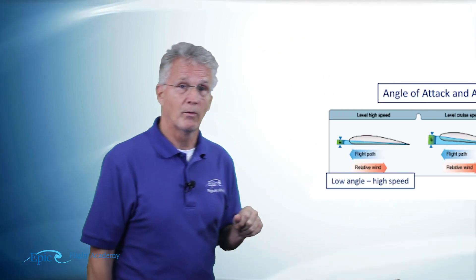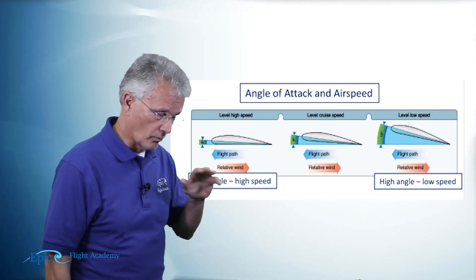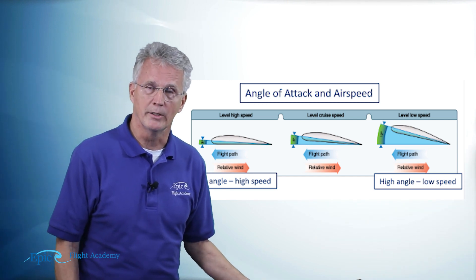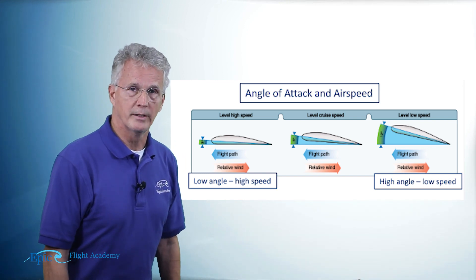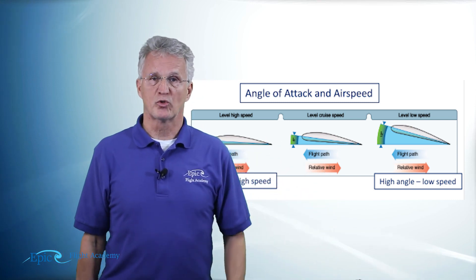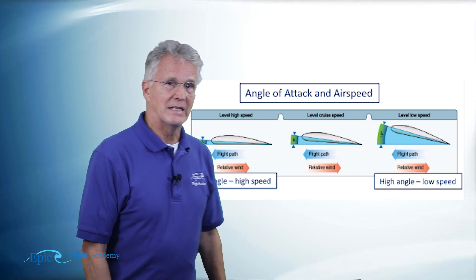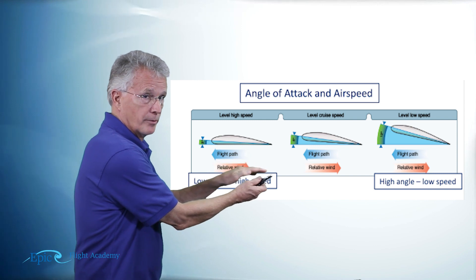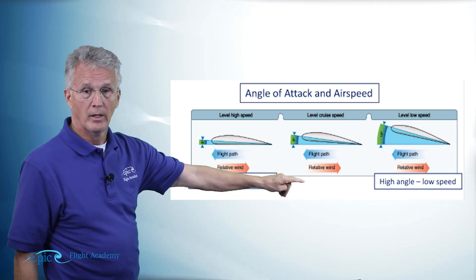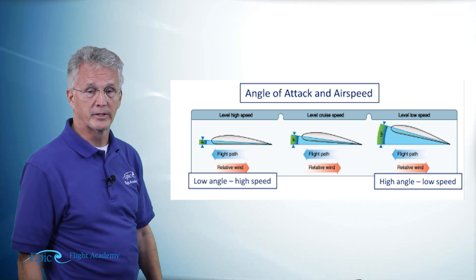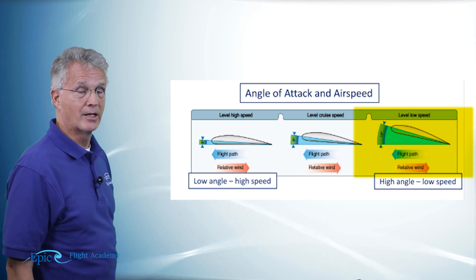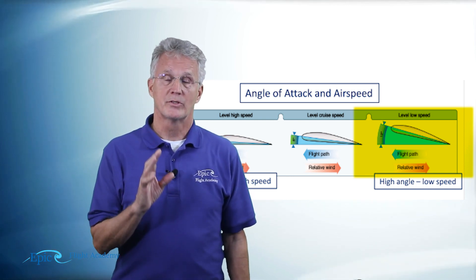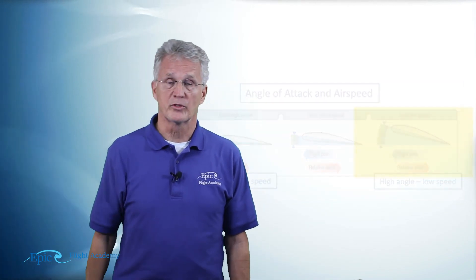Related to that is angle of attack and airspeed. If I want to change the speed of the airplane, the relative wind will change accordingly — a stronger relative wind for a faster forward speed will produce a stronger lifting force, meaning the angle of attack can actually be smaller. As shown here, at high speed it will be a lower angle of attack. At a lower speed, the angle of attack will have to be larger to generate the same amount of lift. This is how we control the speed of our airplane.